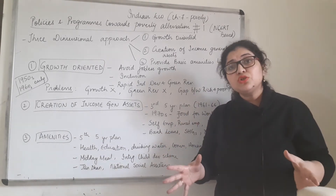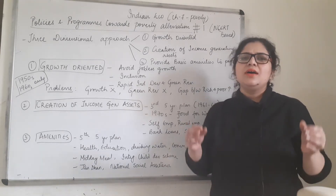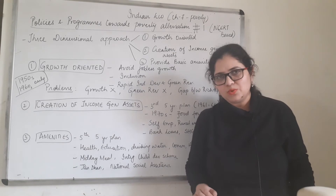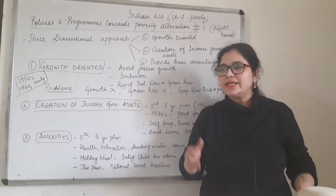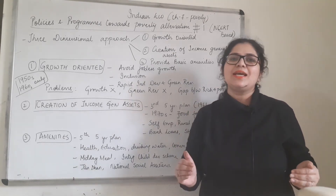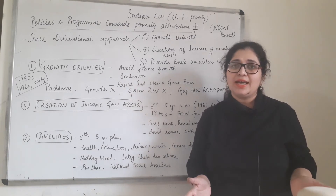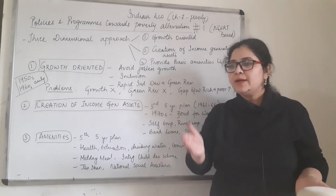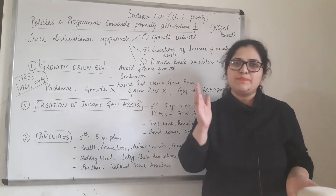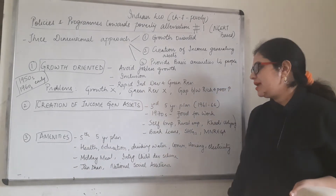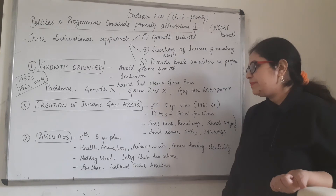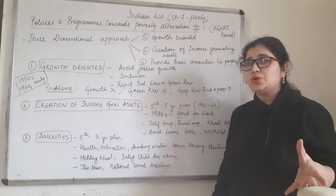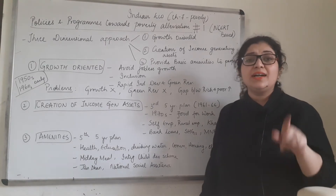The government provides books, uniforms, and mid-day meals — just come to school and get an education. Because there is one way out of poverty, and that is education. That is why the government has the Right to Education up to 14 years of age, and there are seats reserved in private schools so that everyone gets basic right to education. The Integrated Child Development Scheme was also introduced, as well as Jan Dhan Yojana, which opened bank accounts from just 100 rupees so that everyone in the country has a bank account.